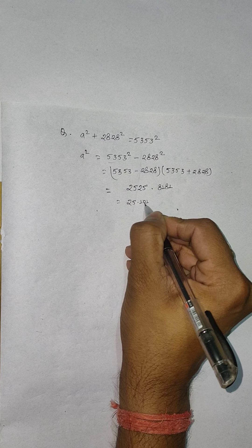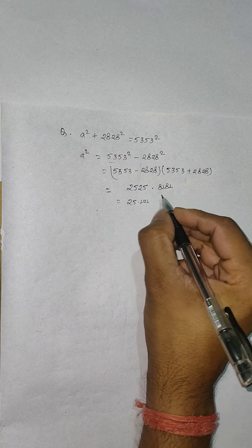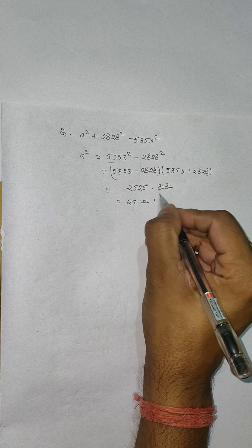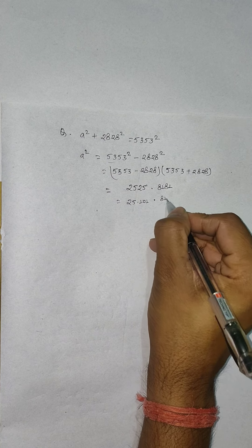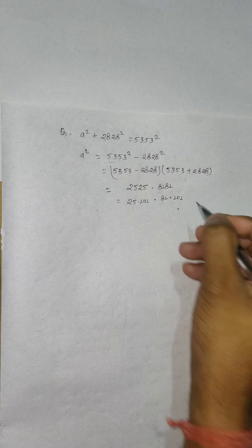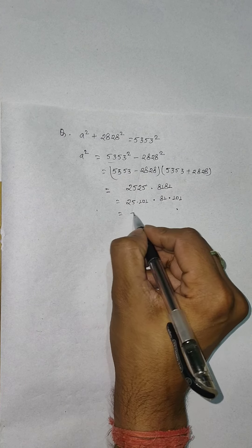Similarly we can write 8181 as 81 × 101. So this will be 5² × 101 and 9² × 101.